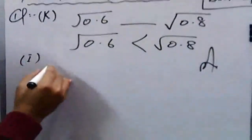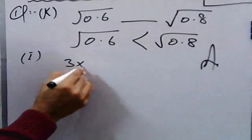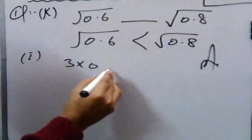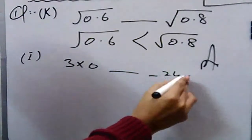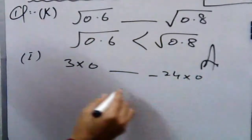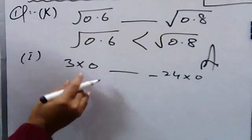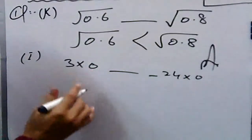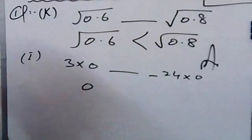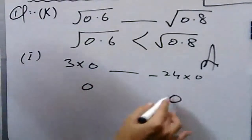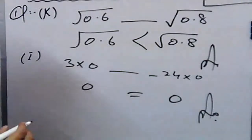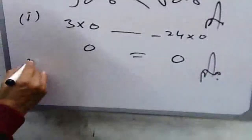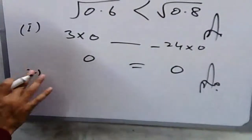In part l: 3 × 0.0 dash −24 × 0.0. Zero multiplied by any term gives zero, so both sides equal zero — they are equal.